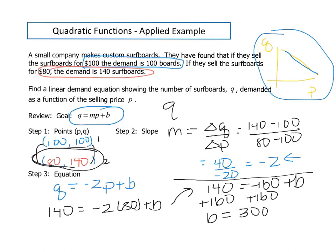Our equation that we just built is negative 2P plus 300. That is our linear demand function.